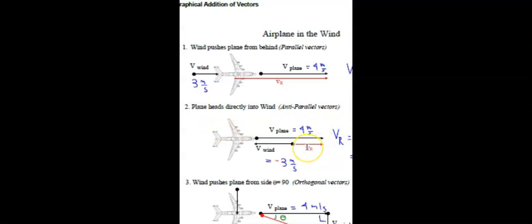In summary, an airplane in the wind is a wonderful example for understanding how more than one vector can be analyzed to find the resultant. We had parallel vectors, which simply add together; anti-parallel vectors, which subtract and give a result in the direction of the larger vector; and orthogonal vectors, which form a simple right triangle. There are other angles we can solve for, but in our curriculum we use graphical representation for those — which we'll cover in the next video on the graphical representation of the resultant of two vectors that are not 90 degrees apart.